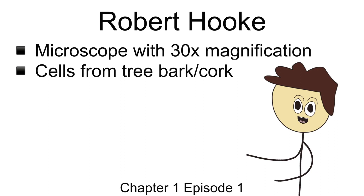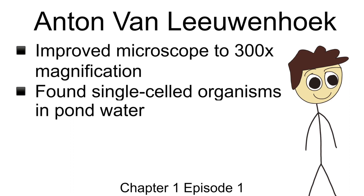Robert Hooke was an Englishman who created an early version of a microscope. It didn't look like anything you've probably ever seen before, but the microscope was able to magnify objects up to 30 times their normal size. Probably the most notable was how he used his invention to examine tree bark, or what you would call a cork. He discovered that the cork was made up of boxy room-like structures, which he called cells. Later on, Anton van Leeuwenhoek decided to improve upon the microscope developed by Robert Hooke. He built a microscope capable of magnifying an object up to 300 times its normal size. Van Leeuwenhoek's most notable discovery was finding that there were tons of organisms living inside pond water. He called these organisms animalcules, but it never really caught on.